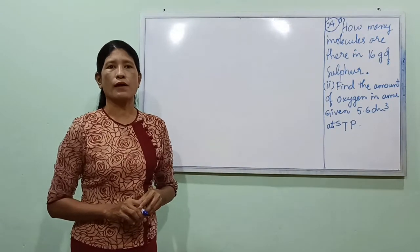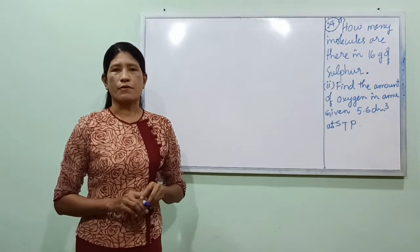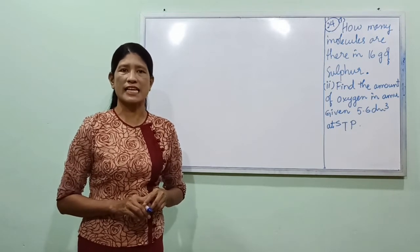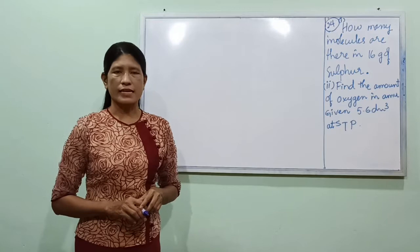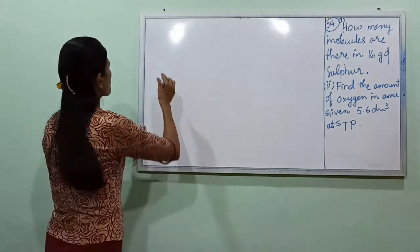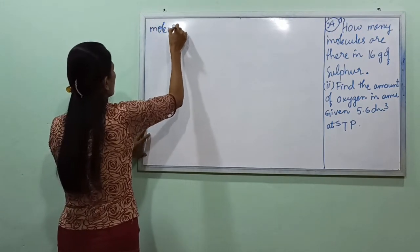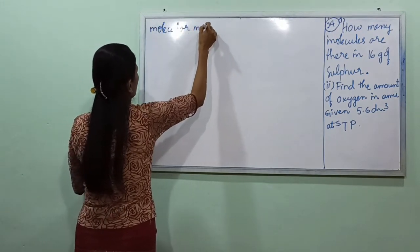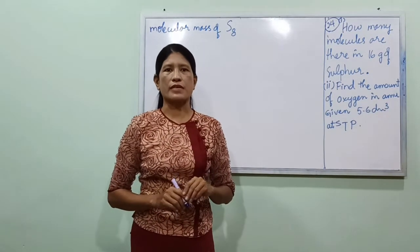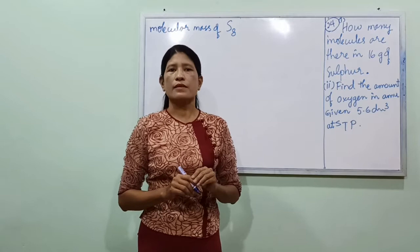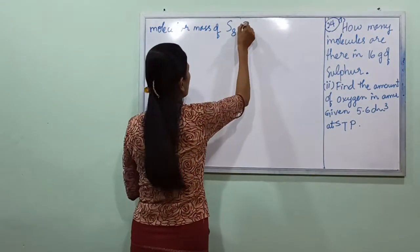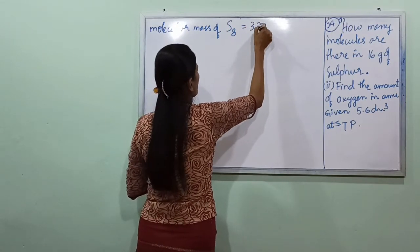Sulfur exists as atoms of S. The molecular formula of sulfur is S₈. The molecular mass of S₈ equals 8 × 32 = 256 AMU.